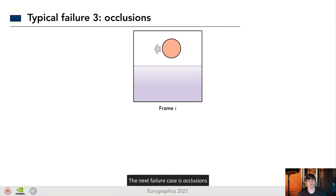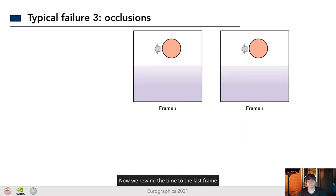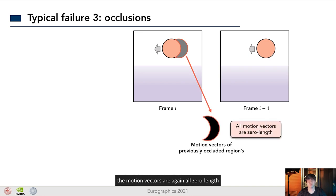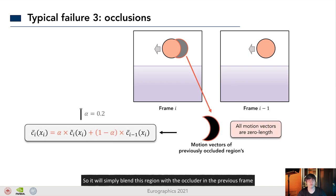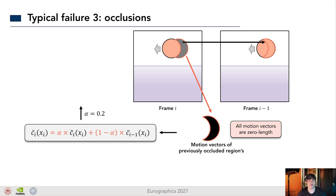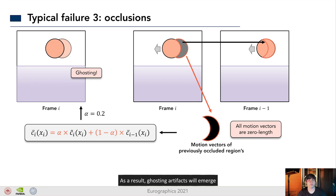The next failure case is occlusions. We have an object moving to the left and with a white wall behind it. Now, we revert the time to the last frame. For the previous occluded regions, the motion vectors are again all zero length. So, it will simply blend these regions with occluders in the previous frame. As a result, ghosting artifact will emerge.